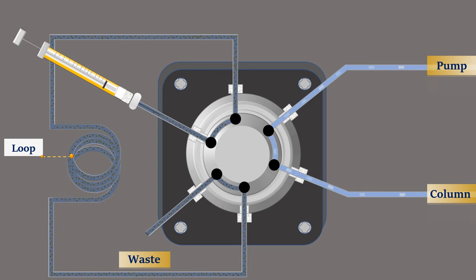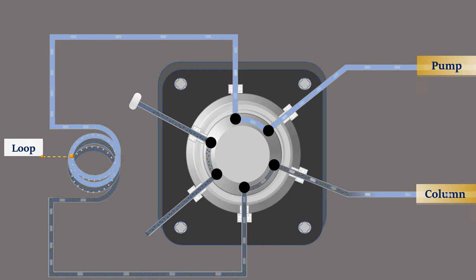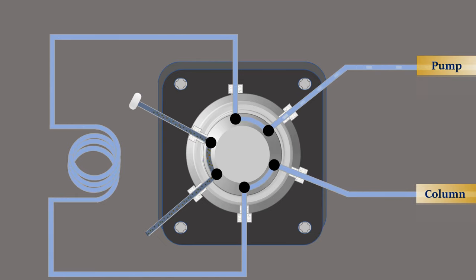After loading the sample, the valve is switched to the inject position. The flow delivered by the pump flows through the loop, forcing the sample ahead of it, flowing to the column. Then, the valve returns to the load position, and the mobile phase moves the sample through the column.